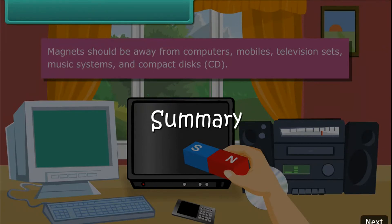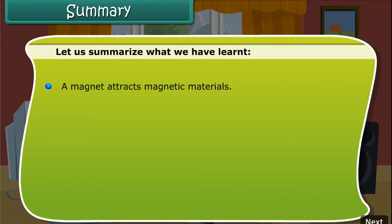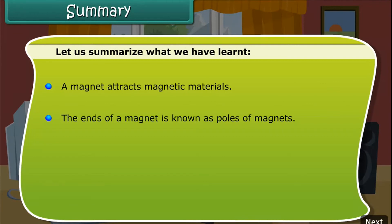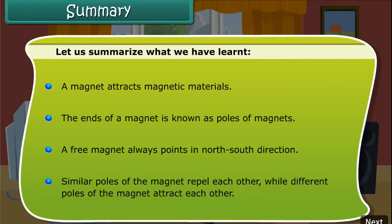Summary. Let us summarize what we have learned. A magnet attracts magnetic materials. The ends of a magnet are known as the poles of the magnet. A free magnet always points in the north-south direction. Similar poles of the magnet repel each other, while different poles of the magnet attract each other.